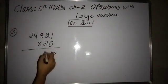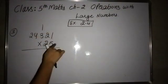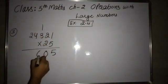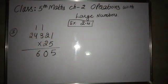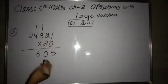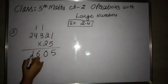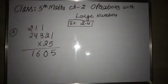Multiplying by 5 first: 5 × 1 = 5, 5 × 2 = 10 so 0 with 1 carry, 5 × 3 = 15 plus 1 = 16 so 6 with 1 carry, 5 × 4 = 20 plus 1 = 21 so 1 with 2 carry, then 5 × 2 = 10 plus 2 = 12. So the first partial product is written down.